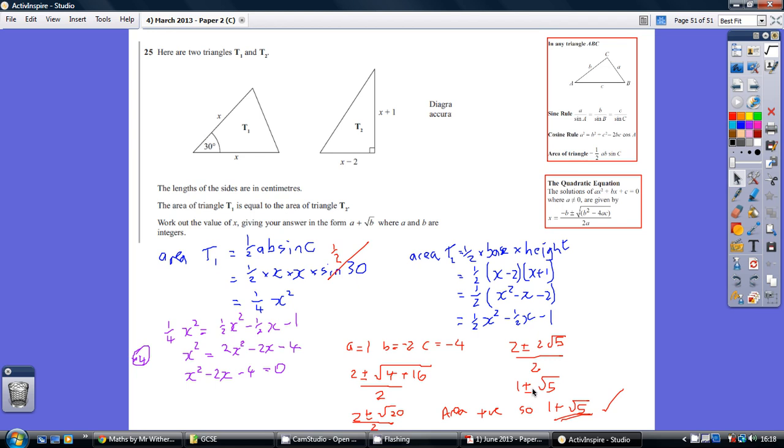Obviously area is a positive, so our final answer, giving it in the form of A plus root B is 1 plus root 5.